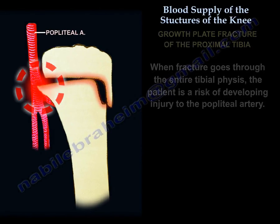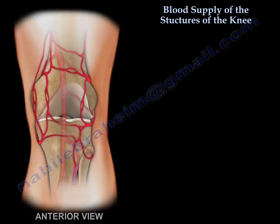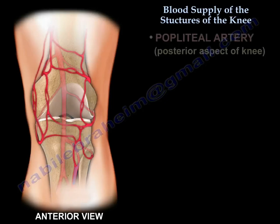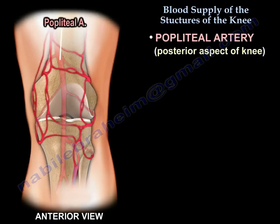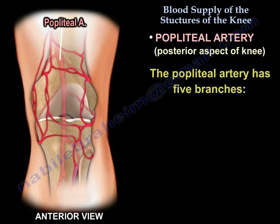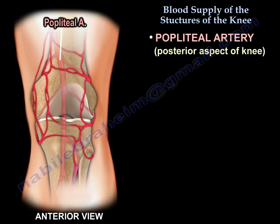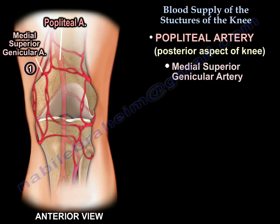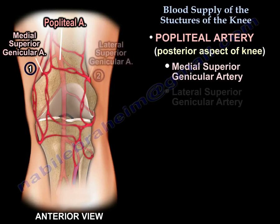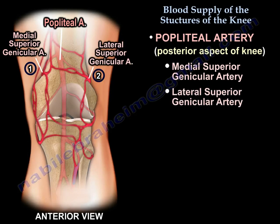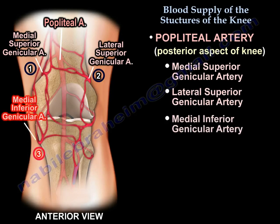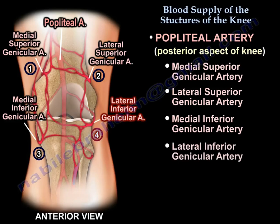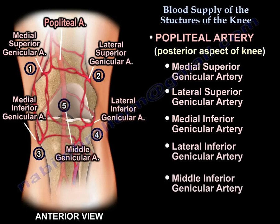The second source of blood supply to the knee is the popliteal artery, which has five branches: the medial superior genicular artery, the lateral superior genicular artery, the medial inferior genicular artery, the lateral inferior genicular artery, and the middle genicular artery.